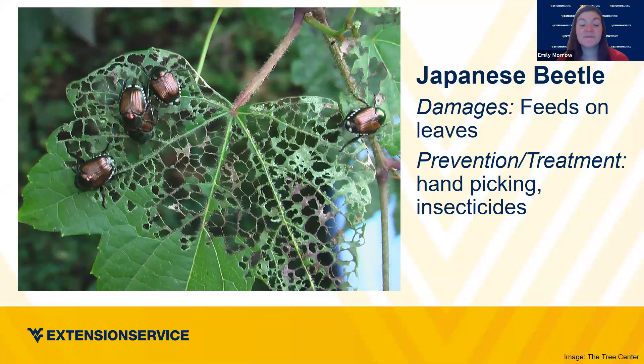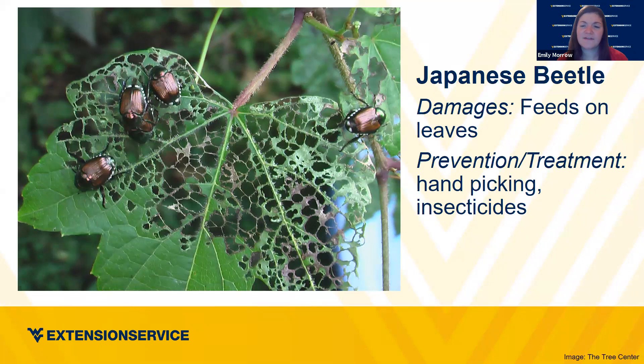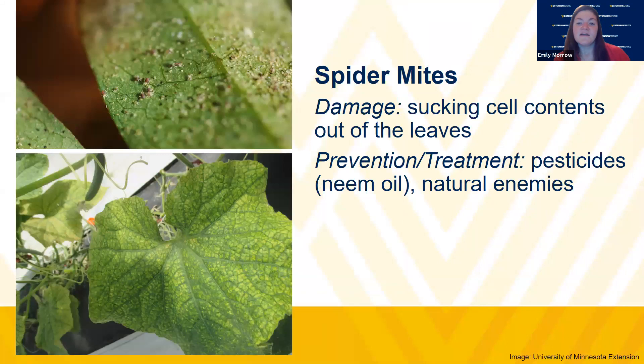Everybody's favorite — the Japanese beetle. They feed on the leaves and kind of skeletonize the leaf. You can hand-water and just shake them off. Same goes for the brown marmorated stink bug. Letting them rot helps deter others that might come into the area. They feed on the leaves; they haven't been as bad in recent years. The stink bugs, though, are still all over the place.